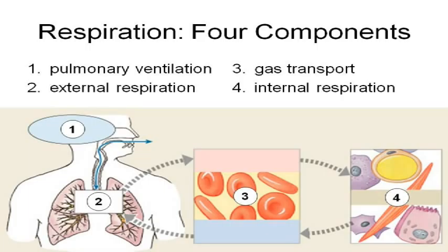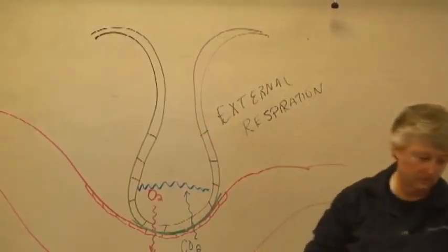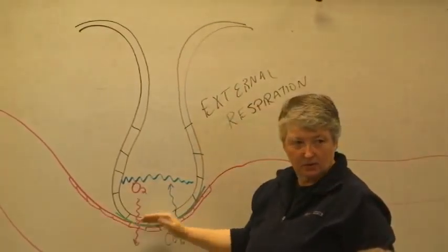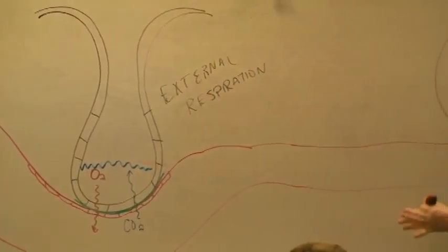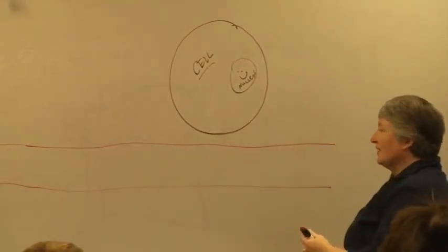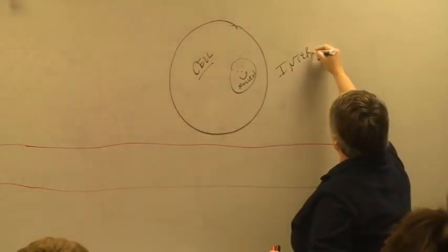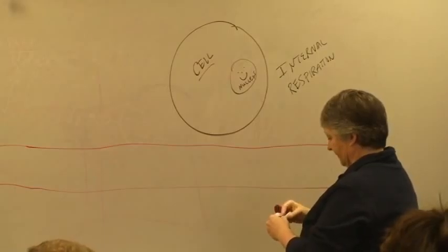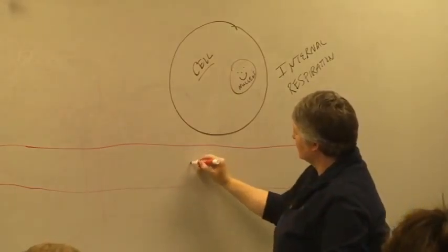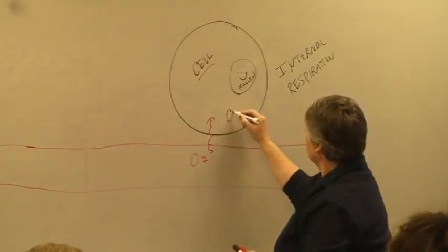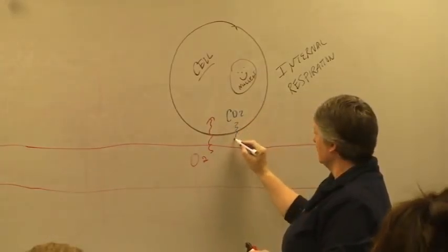You have what's called external respiration, which is what's happening here. So at the lungs, what's happening is oxygen is entering the bloodstream, carbon dioxide is leaving. That's external respiration. Once this oxygenated blood or oxygen-rich blood goes back through the heart and then out the aorta and everywhere else in the body, you have what's called internal respiration. And here the opposite happens - oxygen diffuses out of the blood into the tissues and carbon dioxide goes the other way.